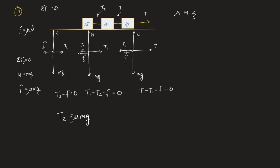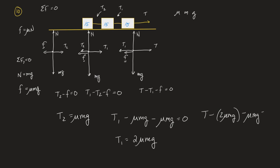You can plug in 0.4, 15, and 10 if you want. Since I know T2, T1 is easy to find. And now that I have T1, I can figure out the tension on the first block: T minus T1 minus friction equals zero, so T minus 2·mu·mg minus mu·mg equals zero, giving T equals 3·mu·mg. Those are your answers.